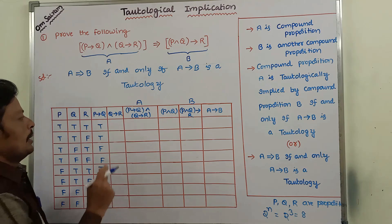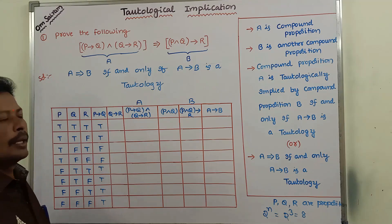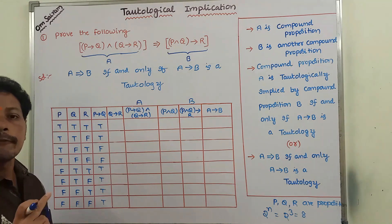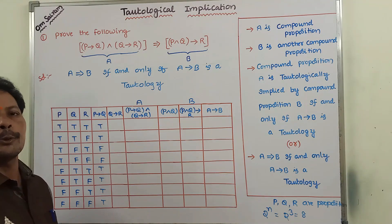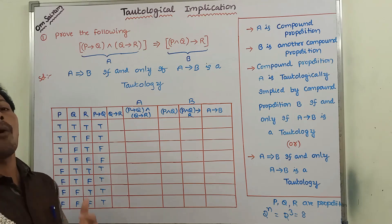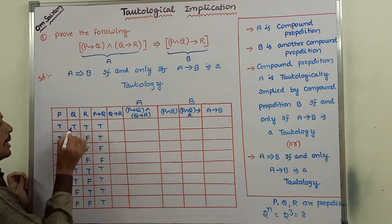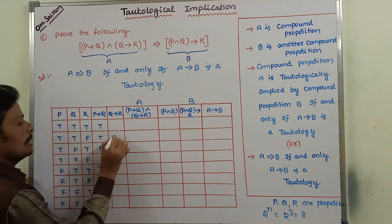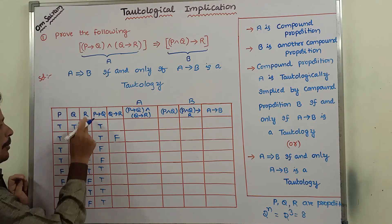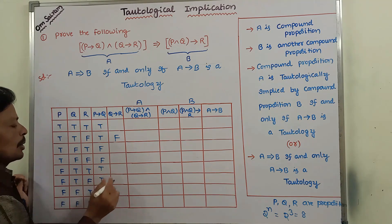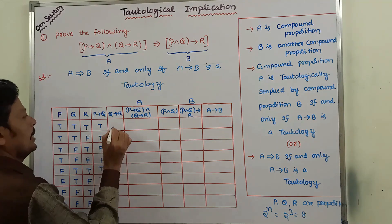For the Q conditional R column: Q conditional R is false when Q is true and R is false; in all remaining cases it is true. There are two combinations where Q is true and R is false, giving Q conditional R as false. In all other cases, Q conditional R is true.